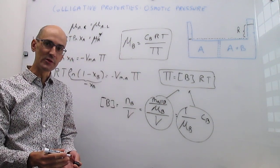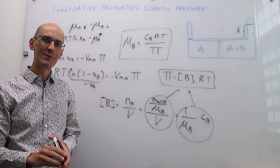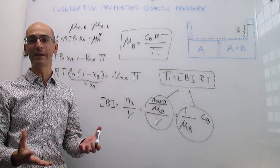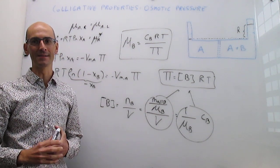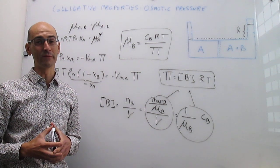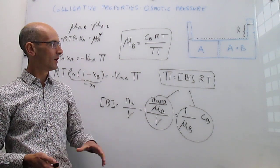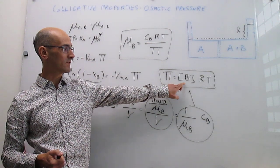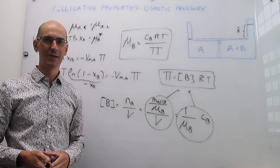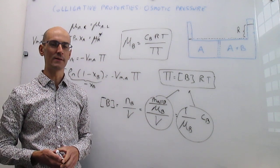In this video we have seen the last colligative property, which is osmotic pressure, with the thermodynamic analysis of the equilibrium condition in an osmotic pressure device. We derived a very simple relationship between osmotic pressure and the concentration of solute, which can be used to determine the molar mass of a solute through osmometry.